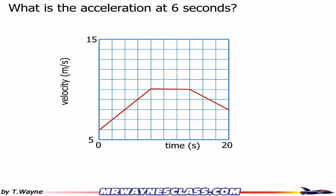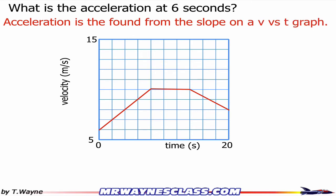The acceleration is found from a velocity versus time graph from the slope. So I'll look at where 6 seconds is — it's this point. And this point is contained in the line, so therefore the point will have the same slope as the whole line. In other words, the acceleration of the whole line would be the acceleration at that point.